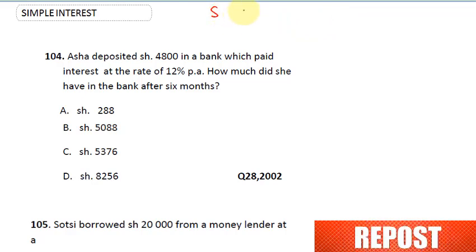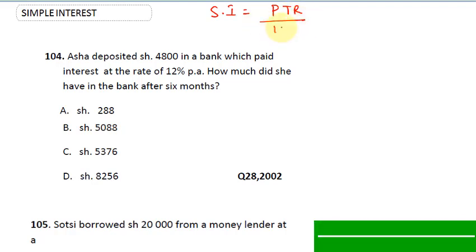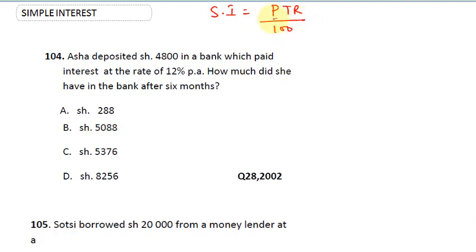For simple interest, the formula is: Simple Interest = Principal × Time × Rate divided by 100. The principal is the amount given to the person. Time is always in years — notice it is per annum, so time is always in years. The rate is always in percentage, which is why we divide by 100. With this you can calculate the interest the person gains.